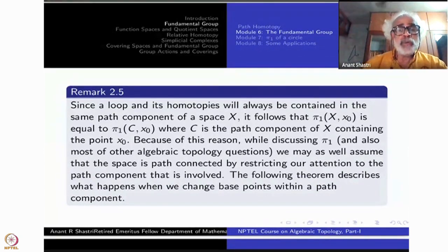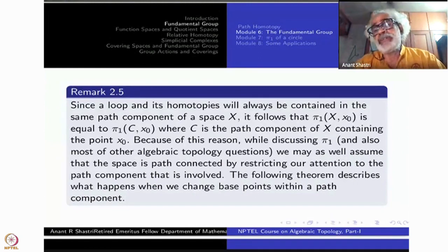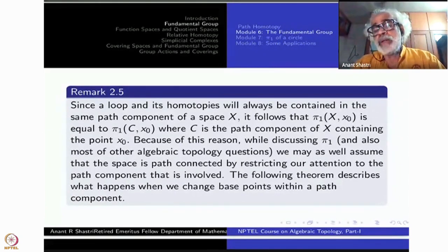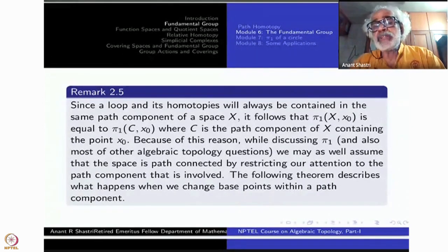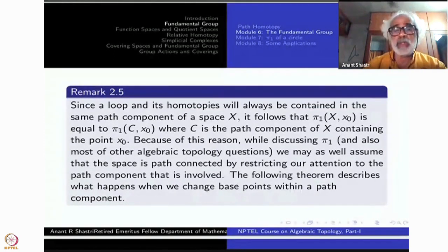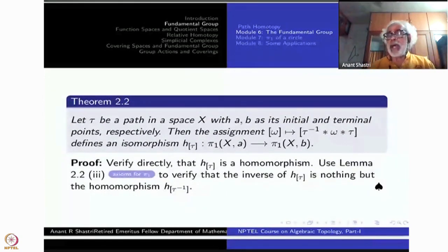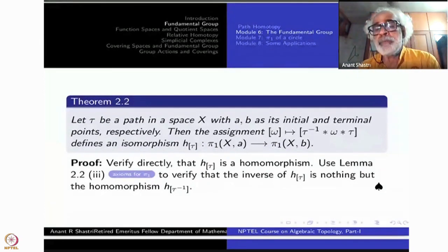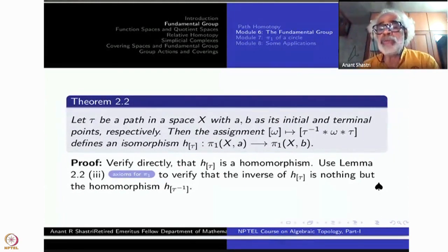Within a path component you may take different points for defining π₁. Suppose X is path connected and we take another point; what is the relation between π₁(X, x₁) and π₁(X, x₀)? This is called the change of base point question. Using the notation a and b instead of x₀ and x₁ — changing notation like this is somewhat dangerous but also good practice.